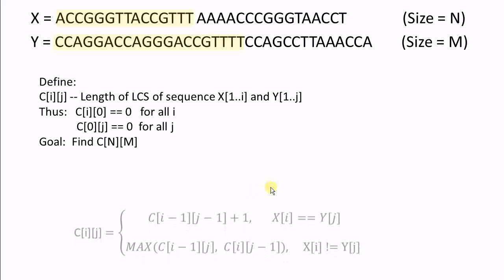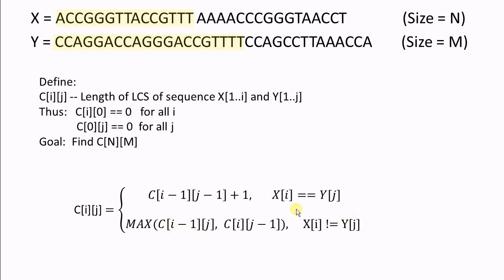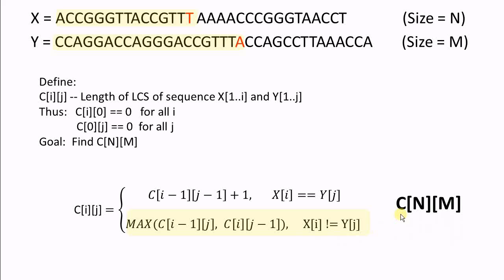By analyzing the problem, we come up with this formula. If x[i] equals y[j], meaning the last item is the same, then C[i][j] equals C[i-1][j-1] plus 1. Since the last item is the same, if we take off the last item, we get C[i-1][j-1]. Otherwise, if the last item is not the same, then C[i][j] equals the bigger of C[i-1][j] and C[i][j-1]. Since we have the initial condition and this formula to derive C with bigger i and j, eventually we'll find C[n][m].